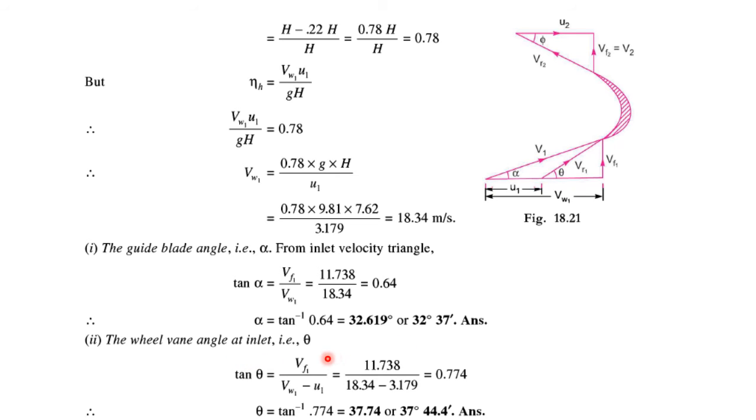The vane angle at inlet θ can be found from this velocity triangle: tan θ = Vf1/(Vw1 - U1) = 11.738/(18.34 - 3.179) = 0.774, which comes to 37 degrees 44 minutes.